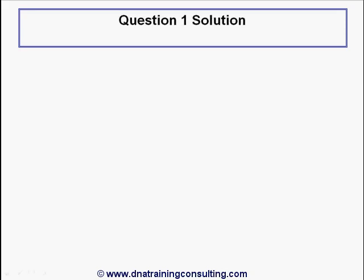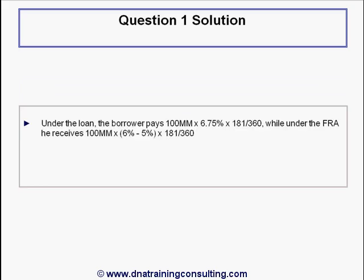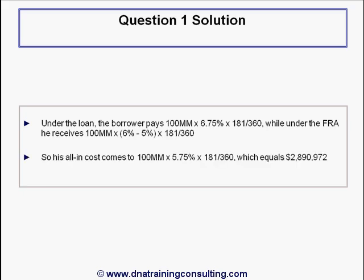Solution to Question 1. Under the loan, the borrower pays the principal of $100 million times the new LIBOR setting of 6% plus 75 basis points, times the number of days divided by 360. Under the FRA, he receives the notional of $100 million times the difference between the 6% LIBOR setting and the FRA contractual rate of 5%, again adjusted for the day count. Subtracting the second item from the first gives his all-in cost: $100 million times 5.75%, adjusted for the day count, which equals just under $2.9 million. The correct answer is B.